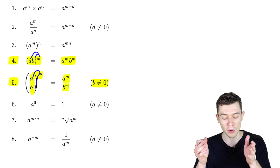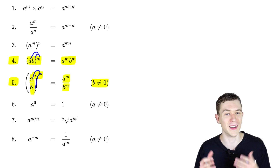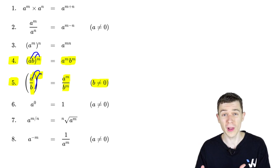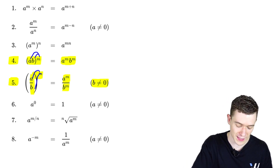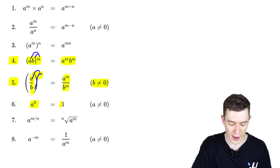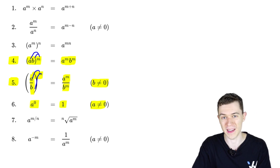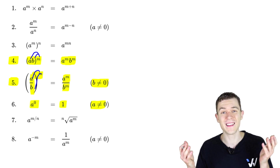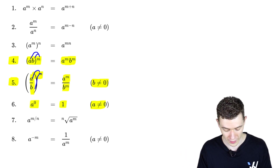Number six is a rule you'll just have to memorize — it doesn't have a whole lot of intuition to it. Any base raised to the zero power is one, provided that base a is not zero. Anything to the zero power is going to be one.